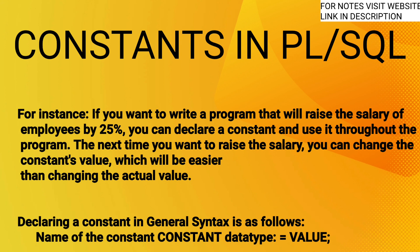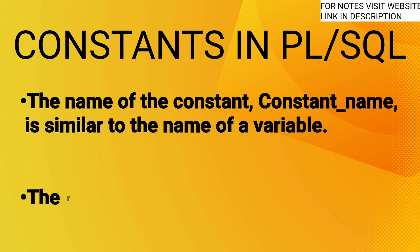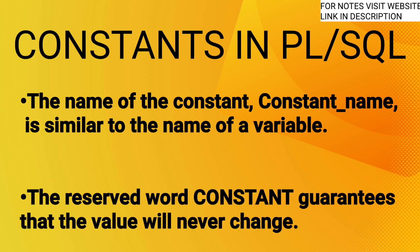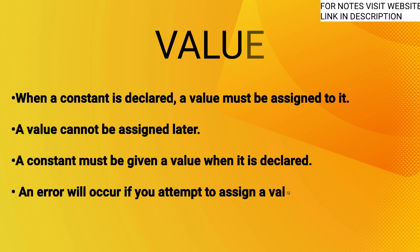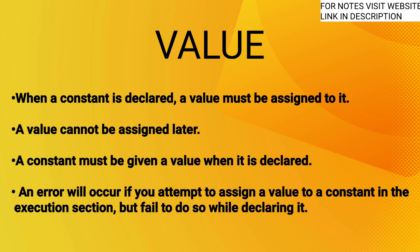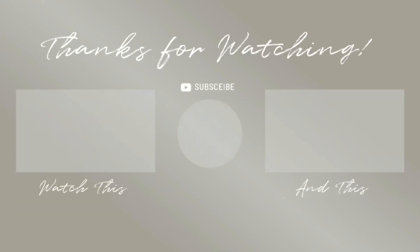Declaring a constant — the general syntax is: constant_name CONSTANT data_type := value. The reserved word CONSTANT guarantees that the value will never change. A value must be assigned when the constant is declared; a value cannot be assigned later. An error will occur if you attempt to assign a value to a constant in the execution section without having declared it with a value initially.